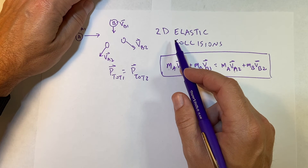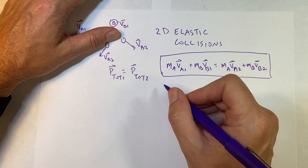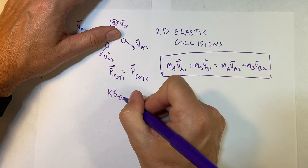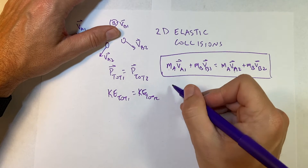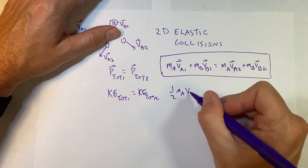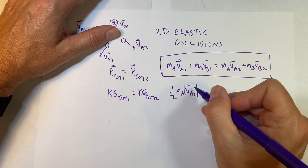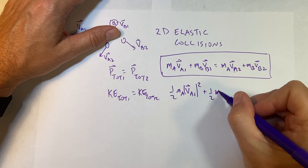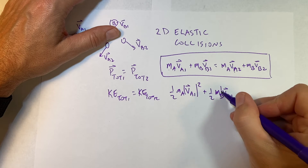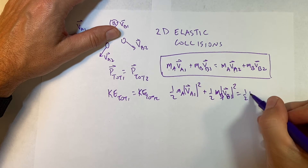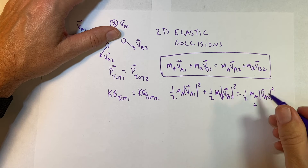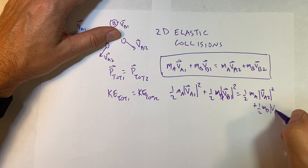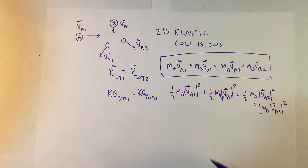Now if it's an elastic collision, kinetic energy should also be conserved: KE-total-1 equals KE-total-2. So I write: one-half m_a |v_a1|² plus one-half m_b |v_b1|² equals one-half m_a |v_a2|² plus one-half m_b |v_b2|². That gives me another equation.